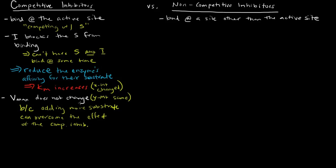So that's what we expect for competitive inhibitors. To give a quick visual: imagine an enzyme with an active site, a circular substrate, and an inhibitor that is also roughly circular. They can both fit in this active site, so whichever one binds is going to stop the other one from binding.